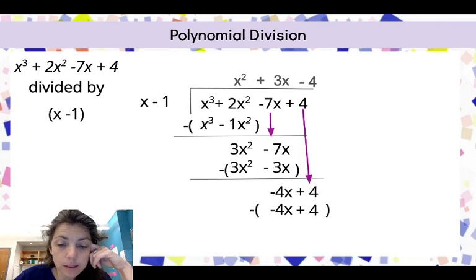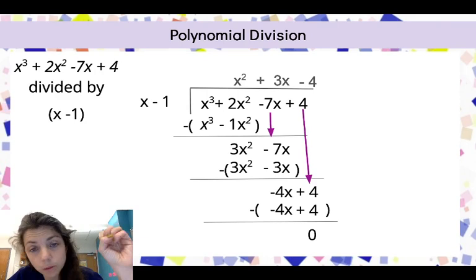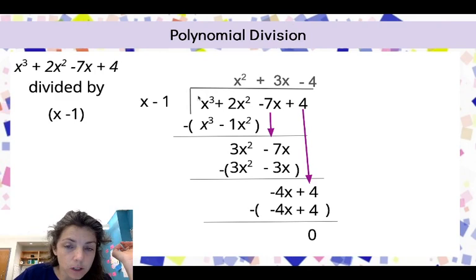Remember, I'm subtracting these. So I'm going to write that out with my parentheses. And 4 minus 4 is 0. Negative 4x plus 4x is 0. We just finished our division problem and have zero remainder. Sometimes we might have a remainder. Here's zero remainder.